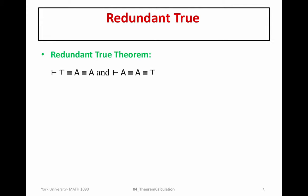We recall the redundant truth theorem proved in class last time. We were able to prove that top is equivalent to A, which is equivalent to A — or applying symmetry, A equivalent to A is equivalent to top. This is a generalization of one of our axioms: when A is bottom, we get the axiom top equivalent to bottom equivalent to bottom, and then a symmetric version of that.